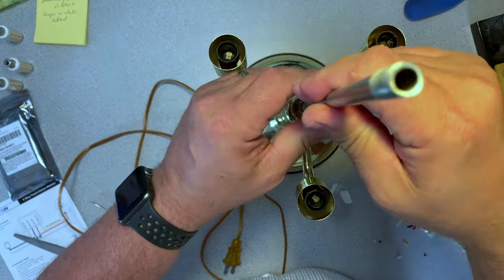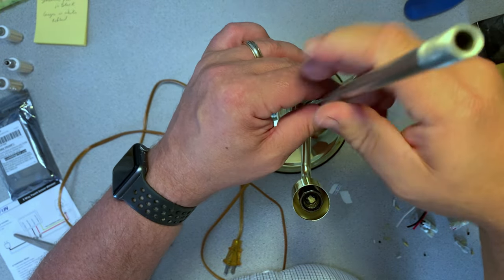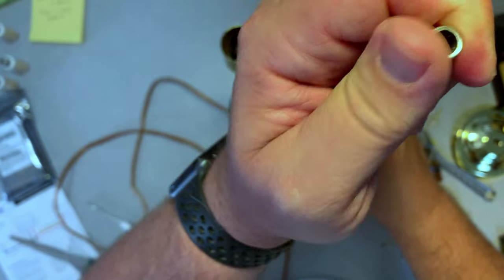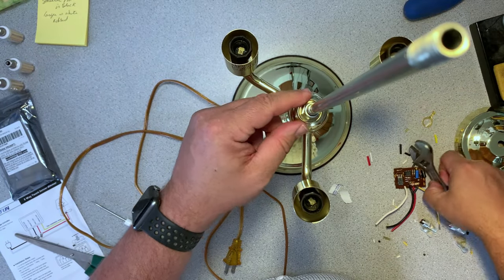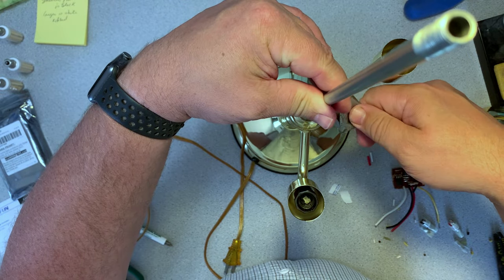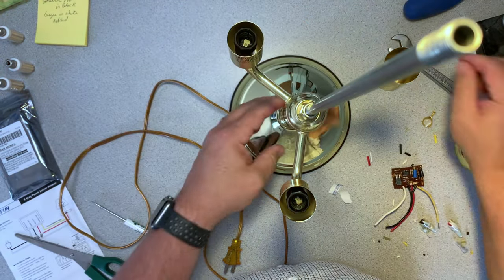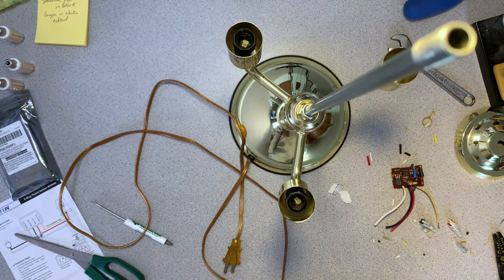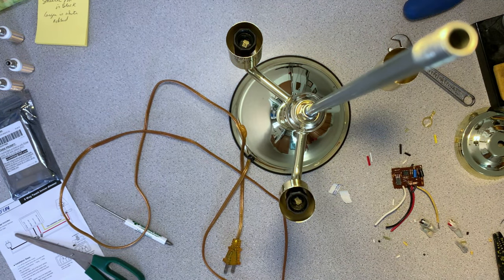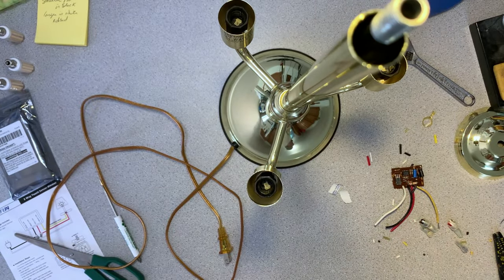Now we can reverse the process. We'll put the rod in that holds up lampshade, tighten it down. And you'll notice I'm just using a wrench just to make sure that it's as tight as possible. I don't want to over torque it, just enough to get it snug. And we can add the decorative tubing back to the lamp now.